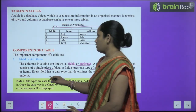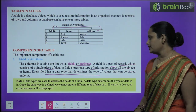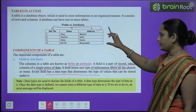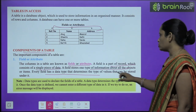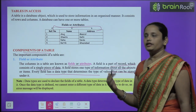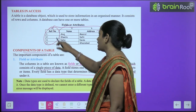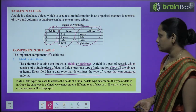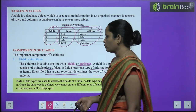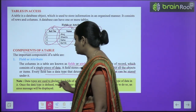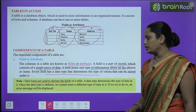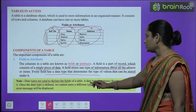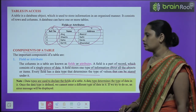Every field has a data type that determines the type of value. Data types are used to declare the field of a table. A data type determines the type of data in it.